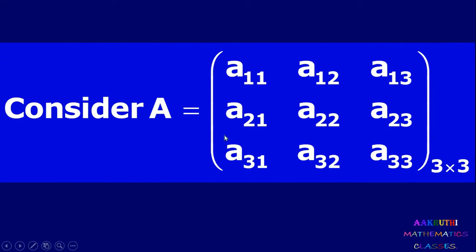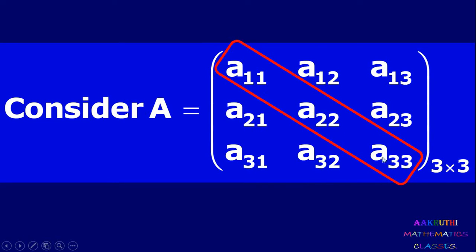Consider a square matrix of order 3: A equal to [a11, a12, a13; a21, a22, a23; a31, a32, a33]. Here a11, a22, a33 are the diagonal elements, going from left top to right bottom.